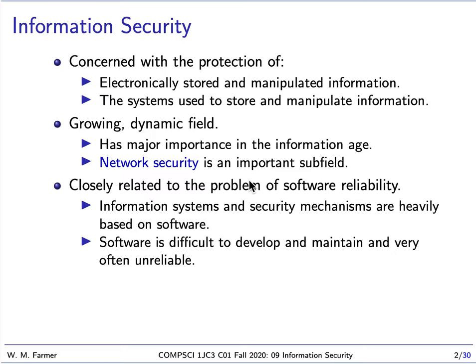A very important subfield of information security is network security, because some of the greatest concerns now about information security involve using networks, in particular the internet. Information security is closely related to software reliability, because information systems and security mechanisms are heavily based on software. And software is very difficult to develop and maintain, and often it's very unreliable, so security problems can occur due to software problems.